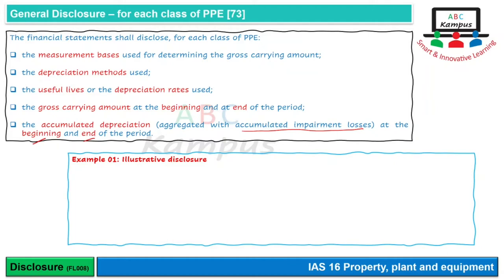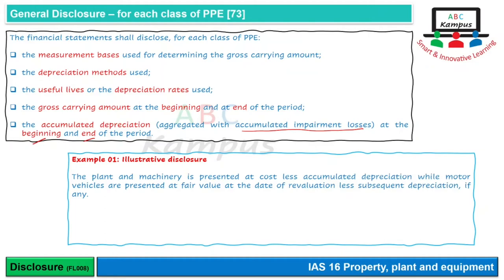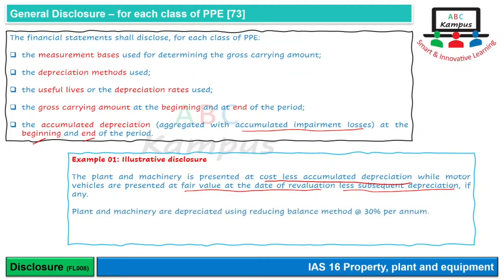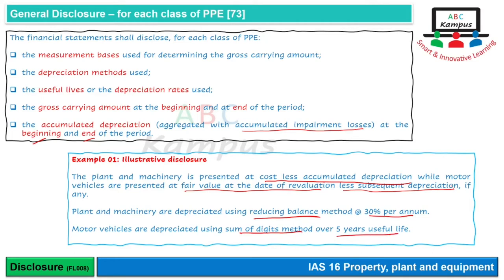Ye narrative nature ke disclosures hain. For example, measurement basis batane ke liye — Plant and Machinery ke liye Cost Model hai, aur Vehicles ke liye Revaluation Model hai. Isi tarah depreciation method aur rate bhi bataya jata hai, jaise Motor Vehicles are depreciated using Sum of Digits Method over 5 years useful life. Ya to depreciation rate batana hota hai ya useful life — dono mein se koi ek kaafi hai.